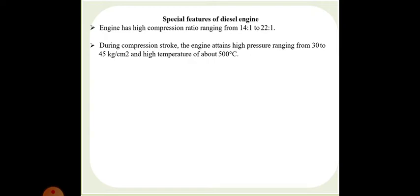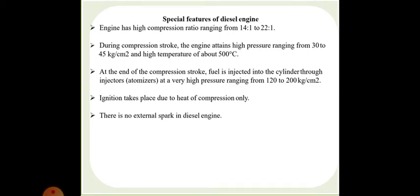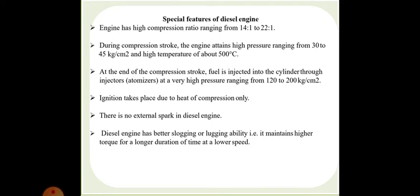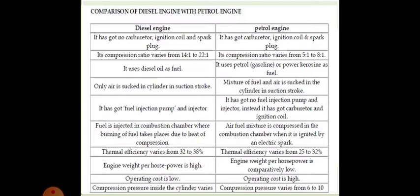The special features of diesel engines: diesel engines have high compression ratios ranging from 14:1 to 22:1. During the compression stroke, the engine attains high pressure ranging from 30 to 45 kg/cm² and high temperature of about 500°C. At the end of the compression stroke, fuel is injected into the cylinder through injectors or atomizers at very high pressure ranging from 120 to 200 kg/cm². Ignition takes place due to the high heat of compression only — there is no external spark plug in diesel engines. Diesel engines have better slogging and lugging ability, maintaining higher torque for longer durations at lower speeds.